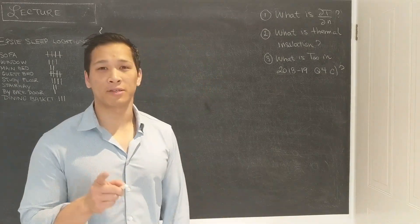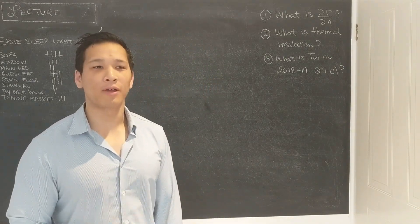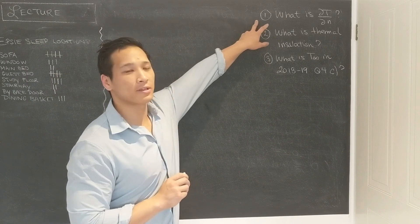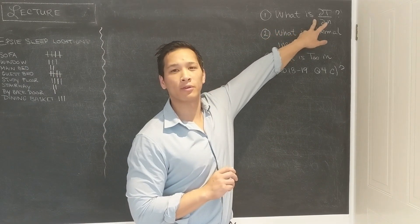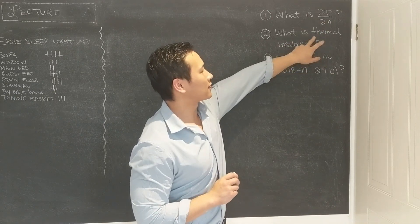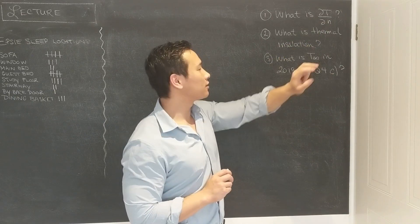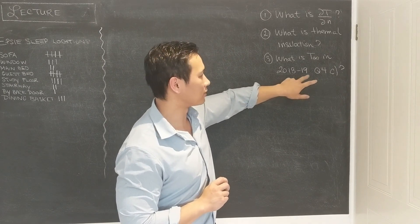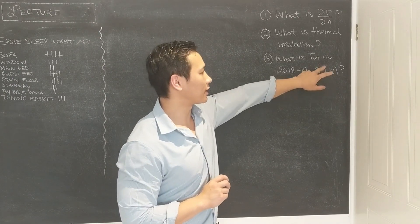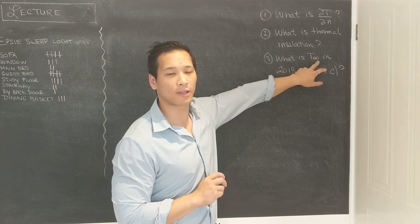Hi folks, in this video I'm going to answer three questions that keep coming up. So the three questions are as follows. The first is, how do you interpret this quantity dT/dn and what does it have to do with the normal derivative? The second is, what does thermal insulation mean? And then the third is related to this 2018-19 question 4c, calculating this t infinity quantity.